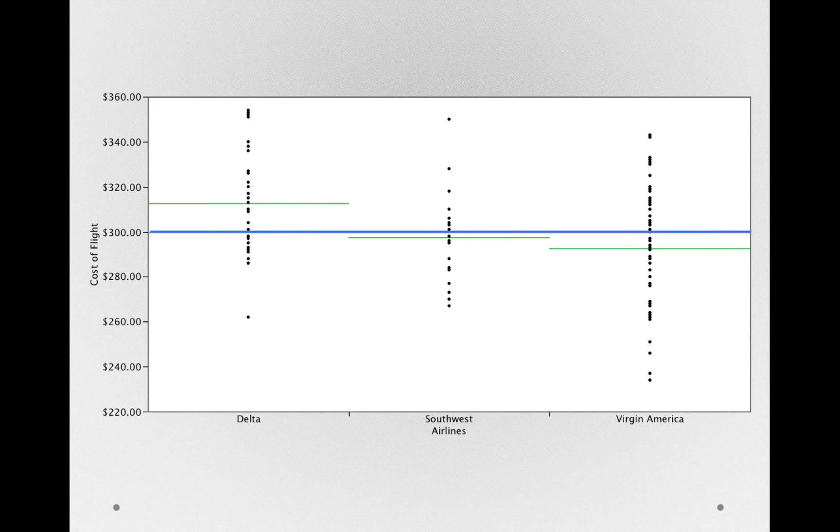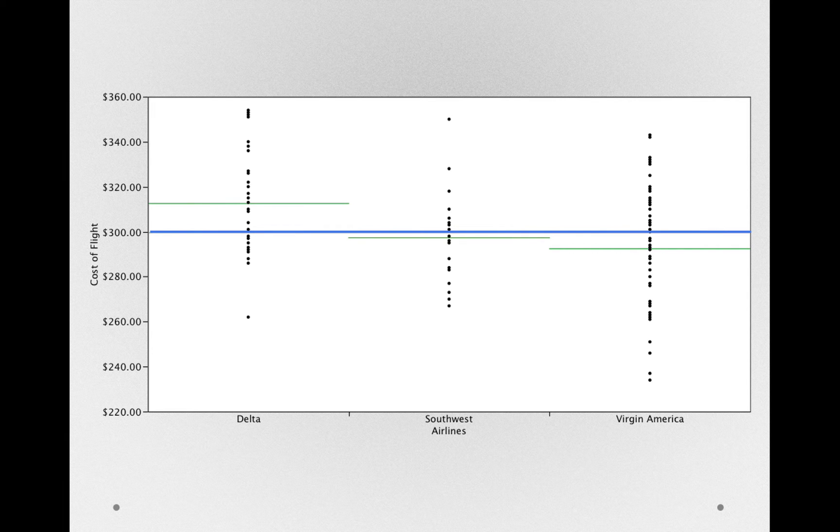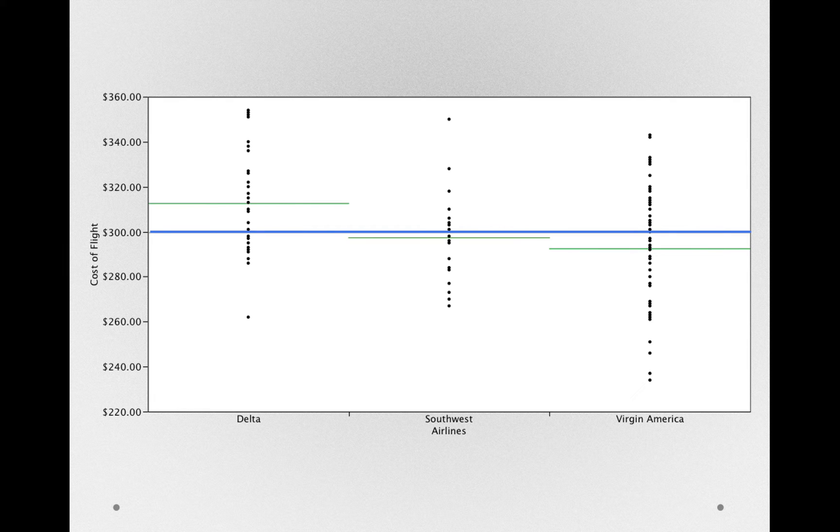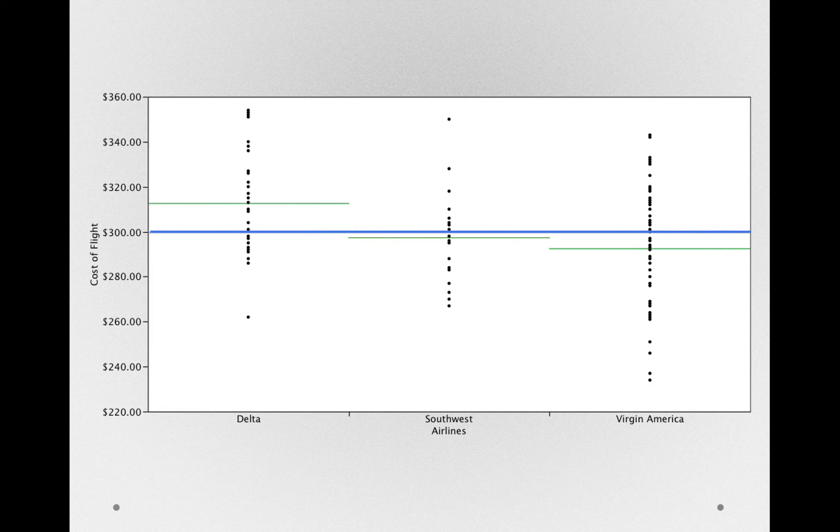But again, let's imagine we're predicting these individuals' cost on the basis of the different airlines they were on. Now notice, even in the population, there is still individual error. That is, even in the population, if we represent individuals in these different airlines, there's still going to be differences between the average of a group and the different individuals in that group.